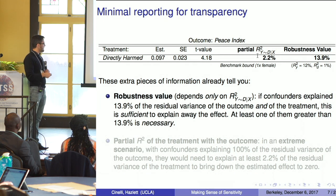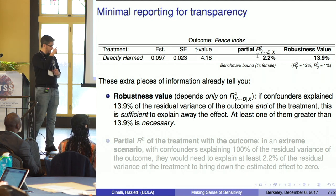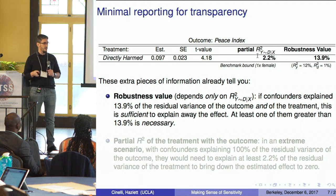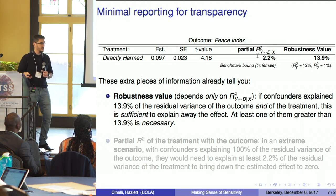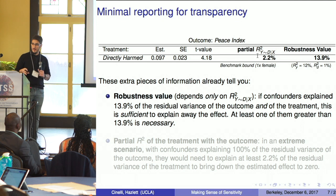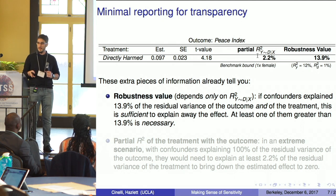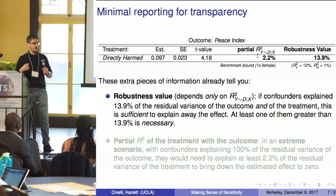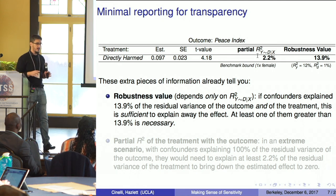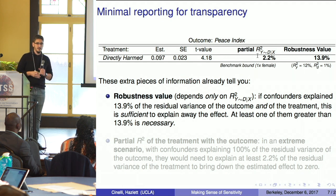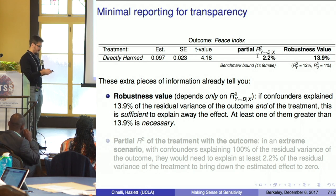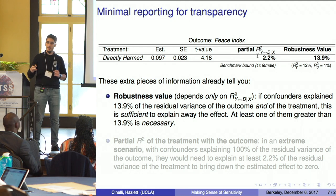These two things already tell you a lot about the sensitivity of your estimate. For instance, the robustness value in the Darfur context tells us that if a confounder explained 13.9% of the residual variance of the treatment and 13.9% of the residual variance of the outcome, that would be sufficient to explain away the effect. It also tells you that if you think the confounder can't explain 13.9% of both, then you're safe — it would not explain away your effect.